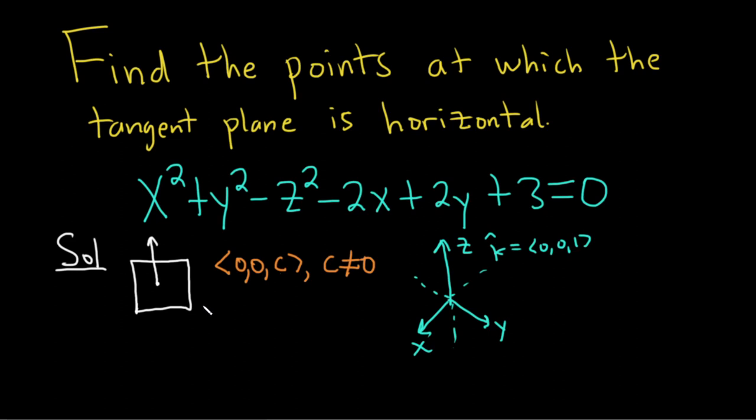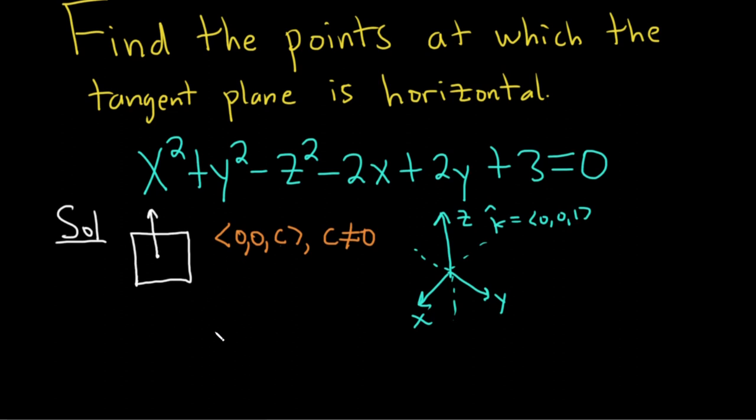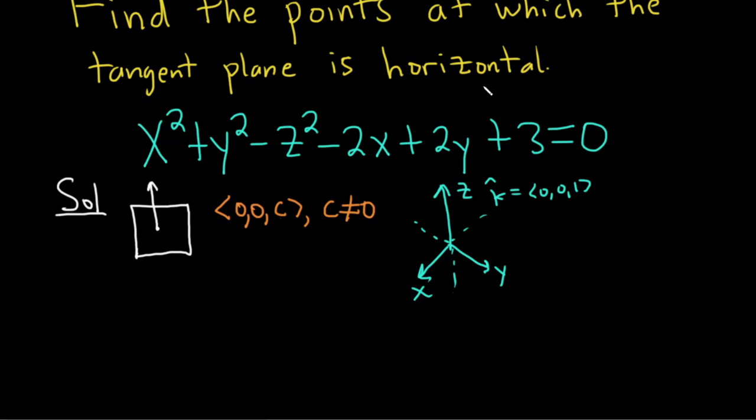Okay, so now that we know what it means for the tangent plane to be horizontal, we need to find the points. We know that there is a vector that is orthogonal to our tangent plane, and that vector is given by the gradient of this. If you think of this piece here as big F, then the gradient of F is going to be orthogonal.